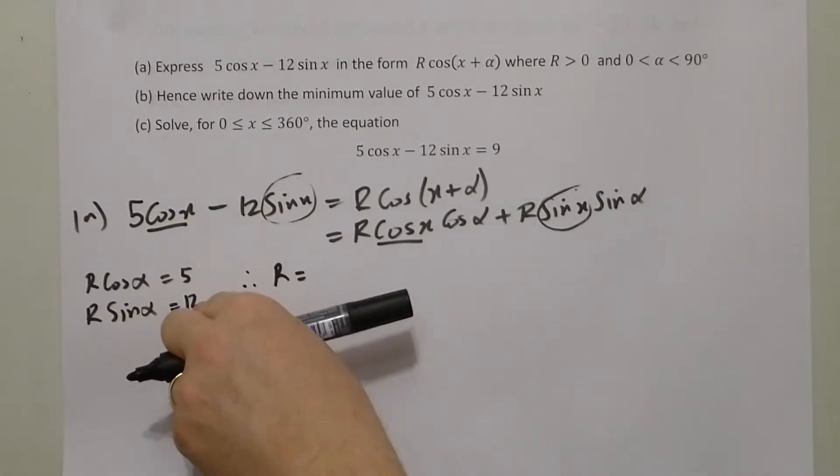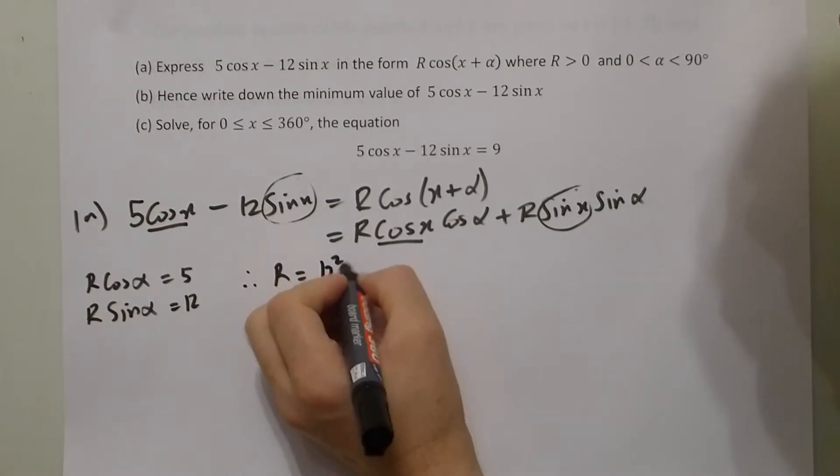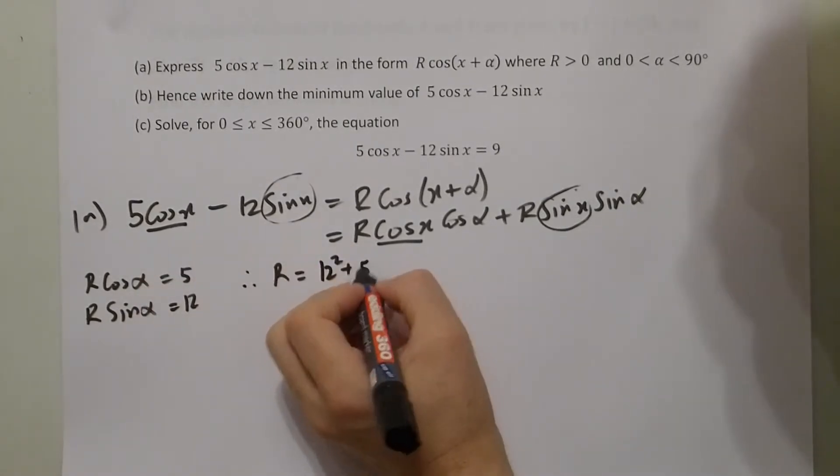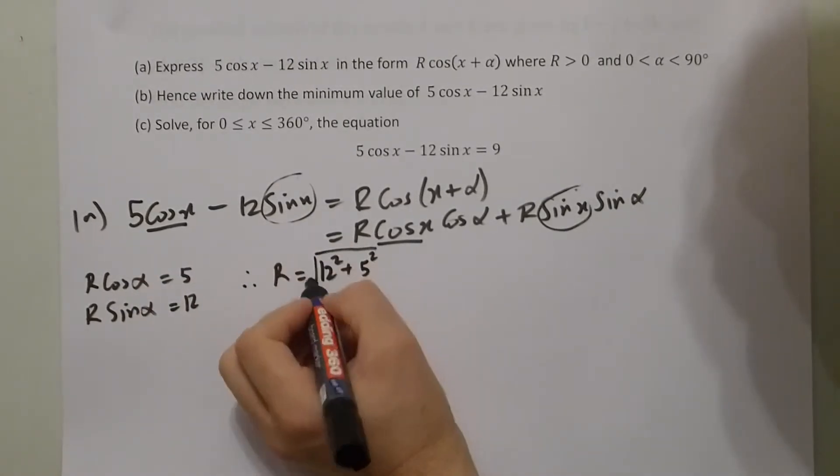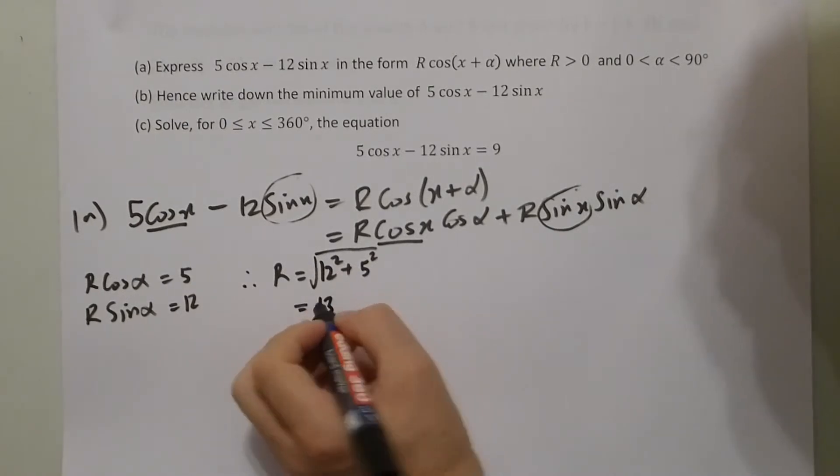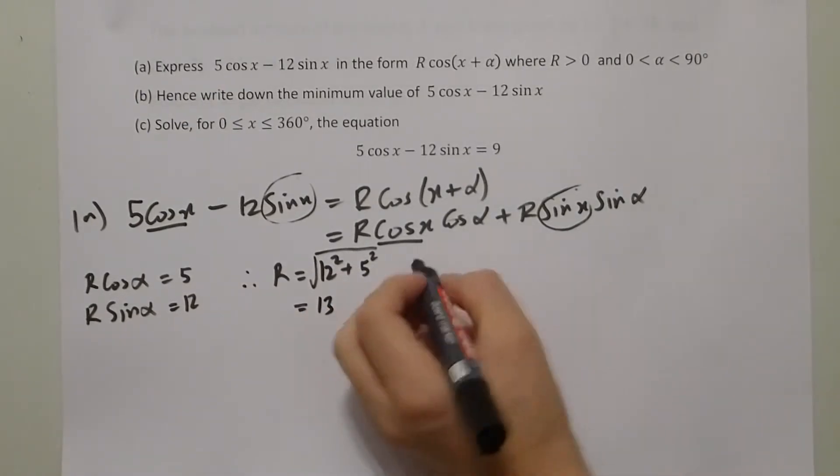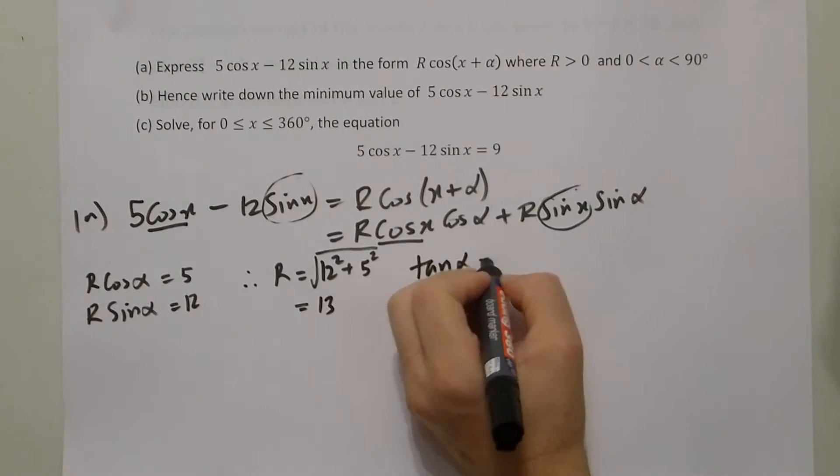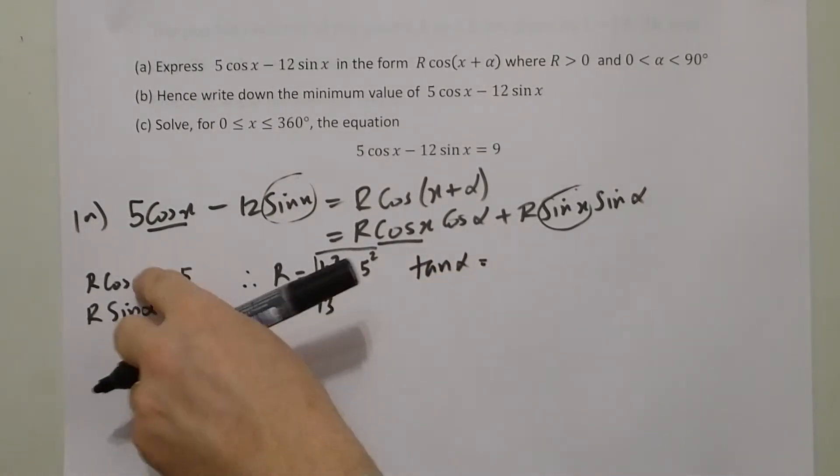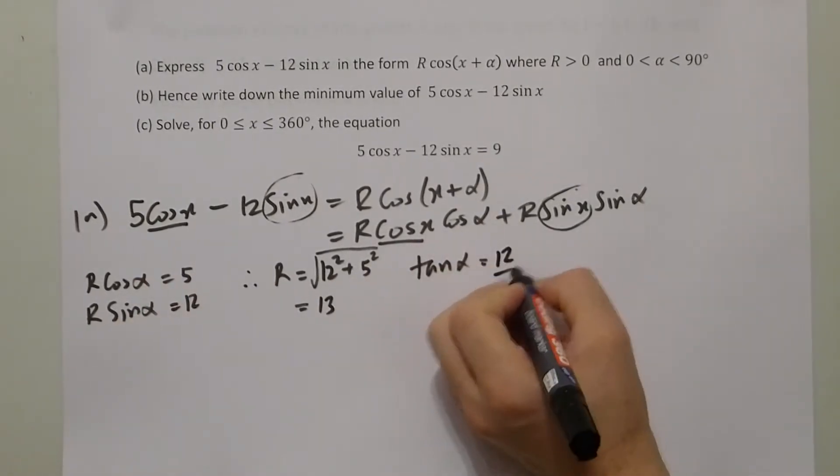Therefore, R must equal the square root of 12 squared plus 5 squared, which gives us an answer of 13. And tan α must equal sine over cos, so 12 over 5.